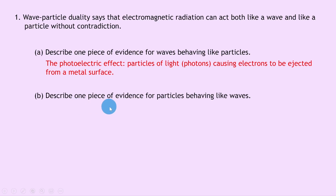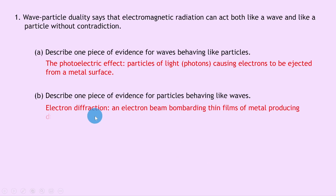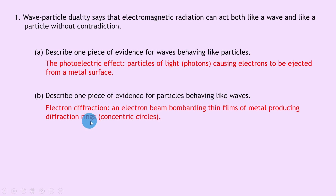You could also have mentioned Compton scattering here. Part b says describe one piece of evidence for particles behaving like waves. A key piece of evidence from the notes was electron diffraction, which is an electron beam bombarding thin films of metal producing diffraction rings — i.e. concentric circles.